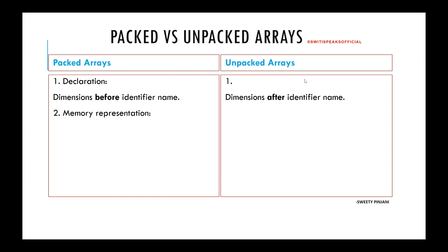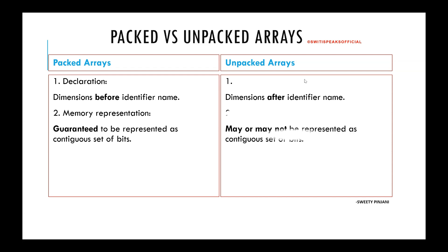The second point is how they are represented in memory. In case of a packed array, it is guaranteed that they will be represented as a contiguous set of bits. But in case of an unpacked array, it may or may not be represented as a contiguous set of bits.